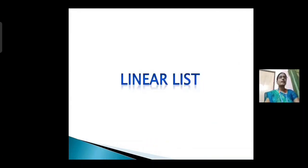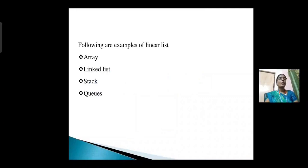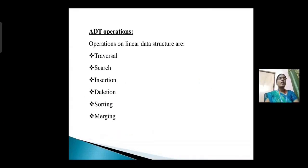Next topic is linear list. A data structure is said to be linear if its elements form a sequence or a linear list. Examples of linear list are: array, linked list, stack, queue. Operations on linear data structures are: traversal, search, insertion, deletion, sorting, merging.